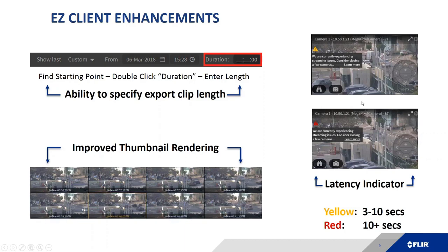New latency indicators are also displayed in the Easy Client live view. A yellow indicator means you have 3 to 10 seconds of latency; a red indicator means more than 10 seconds of delay in delivering video or audio to your panes. The warnings also provide information on what you might do to overcome the latency issue — very helpful for identifying and resolving problems.